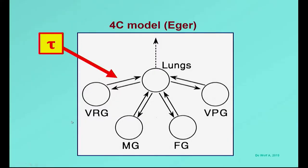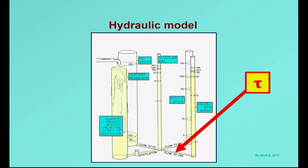The time constant looks at the speed of exchange between the vessel-rich group — the brain or CNS — and the lung compartment. Another way to look at the time constant is the hydraulic model. If you want to see how fast there is an exchange of vapor between the alveolar gas and the vessel-rich group, you look at the diameter of the pipe connecting these two systems. The larger the pipe, the shorter the time constant, and the faster the equilibration will be. But that's only half of the story.